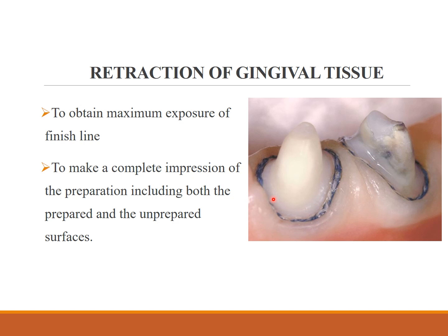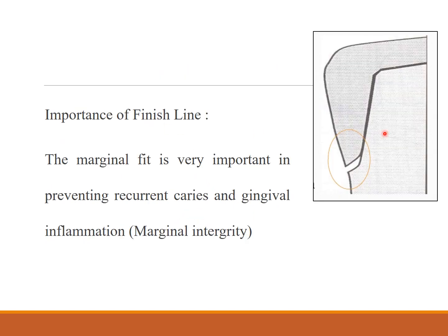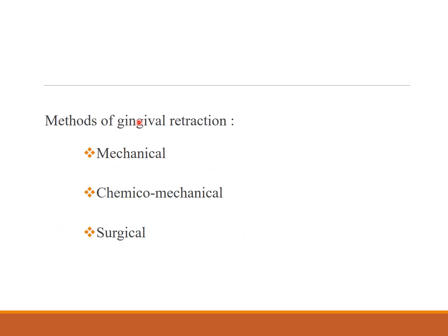Retraction of the gingival tissue is done to obtain maximum exposure of the finish line and to make a complete impression of the preparation, including both the prepared and unprepared surfaces. The importance of the finish line is to get marginal integrity, which is very important in preventing recurrent caries and gingival inflammation.